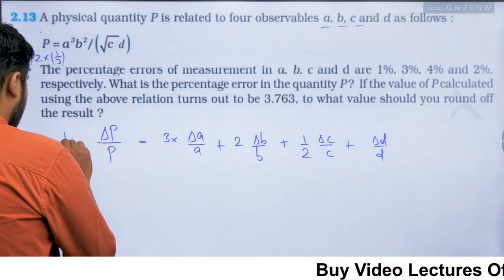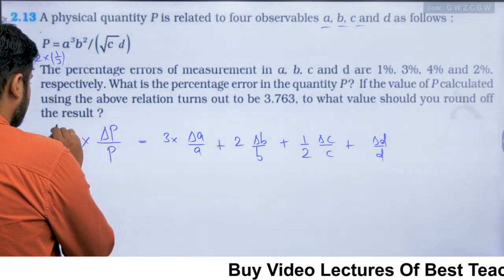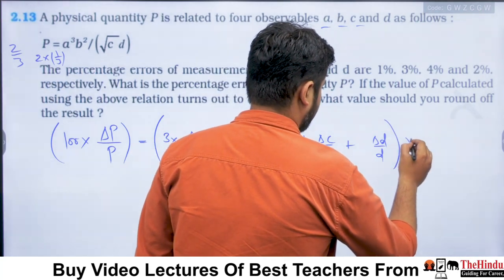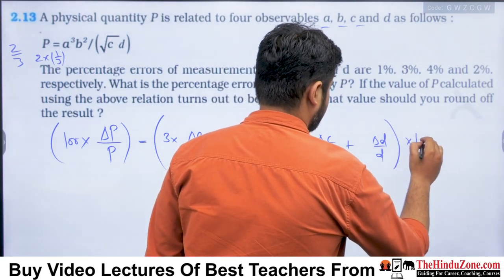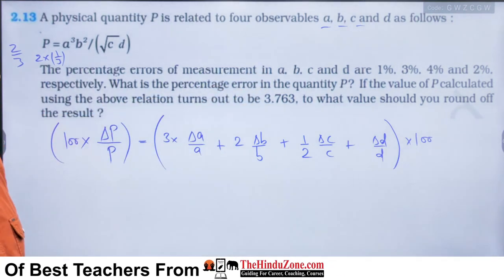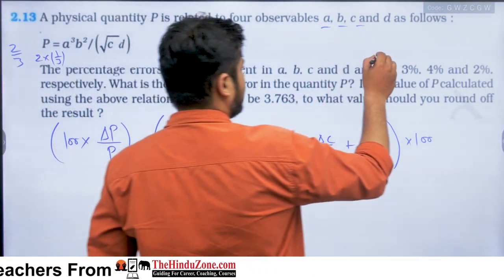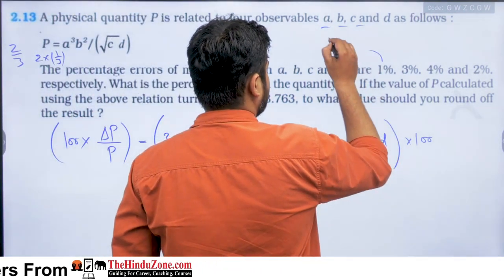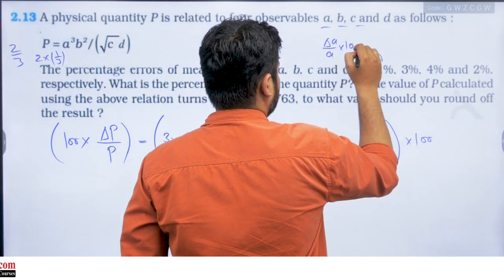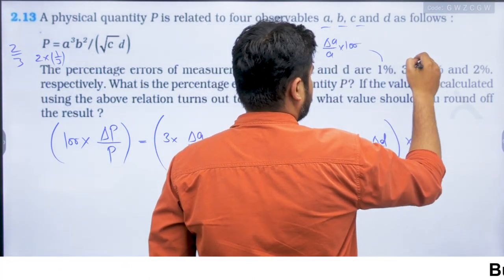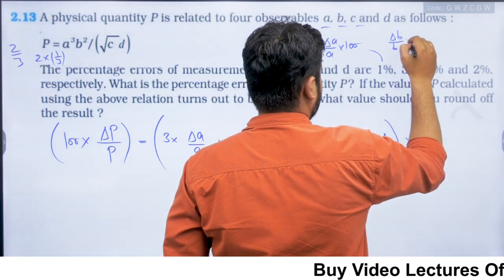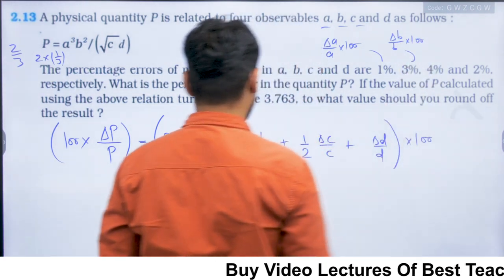And finally, if you have a percentage error, we will multiply 100 on both sides. So the percentage errors in A, B, C, D are already given: 1% means delta A by A into 100 is 1%, and 3% means delta B by B into 100 is 3%.